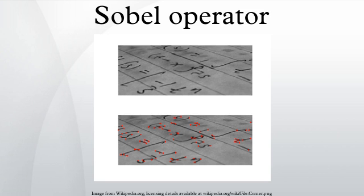More precisely, it uses intensity values only in a 3x3 region around each image point to approximate the corresponding image gradient, and it uses only integer values for the coefficients which weight the image intensities to produce the gradient approximation.